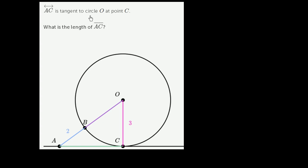Line AC is tangent to circle O at point C. What is the length of segment AC?